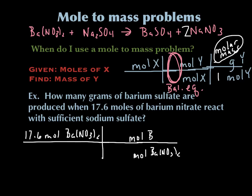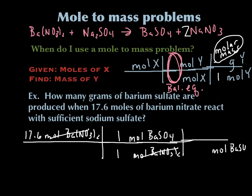So moles of BaSO₄ go on top. I look at my balanced chemical equation — Ba(NO₃)₂ has no coefficient, that means it's an understood 1, so I put a 1 down here. Then I look at BaSO₄ — no coefficient, understood 1 — so I put a 1 on top. I've successfully switched over from moles of Ba(NO₃)₂ to moles of BaSO₄. Now I continue on in the action line and change moles of BaSO₄ to grams of BaSO₄, and I get this from the periodic table.